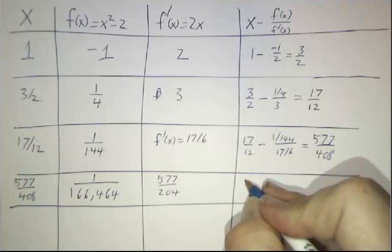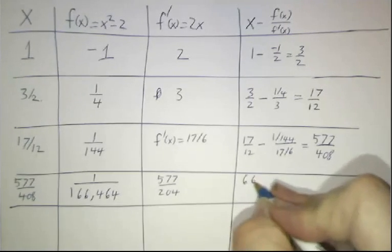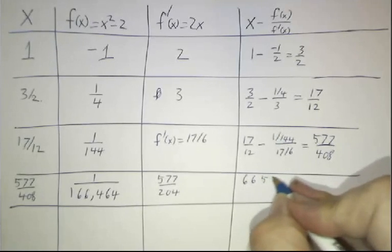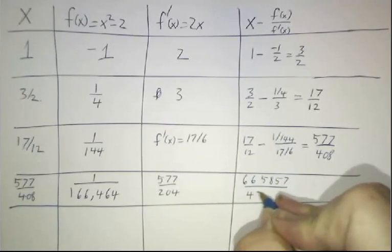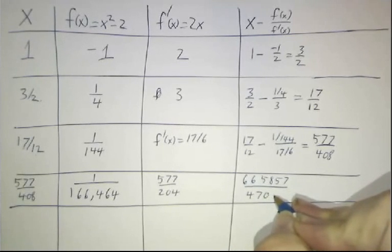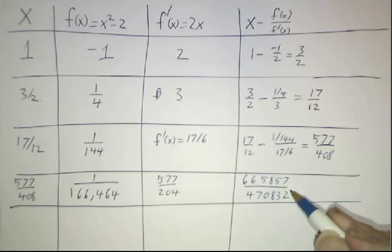The derivative is 507 over 204. And you take the difference and it winds up being 665,857 divided by 470,832. It takes a little while to crank that out.